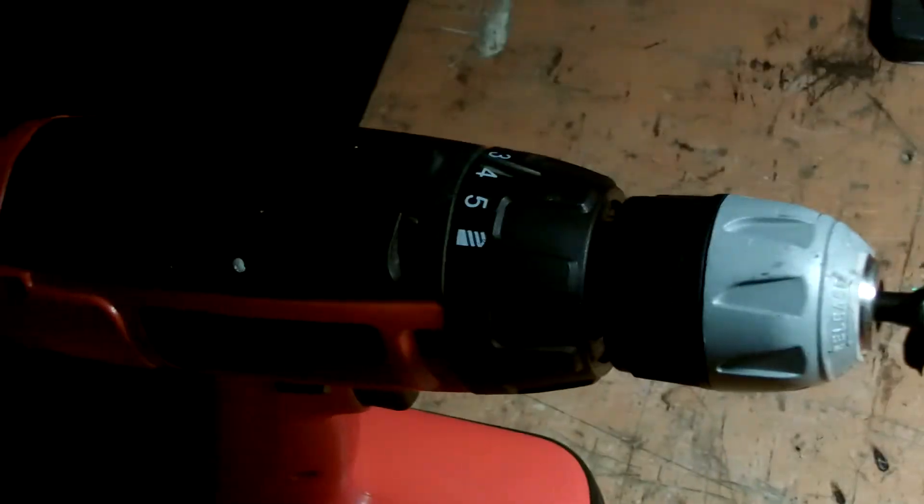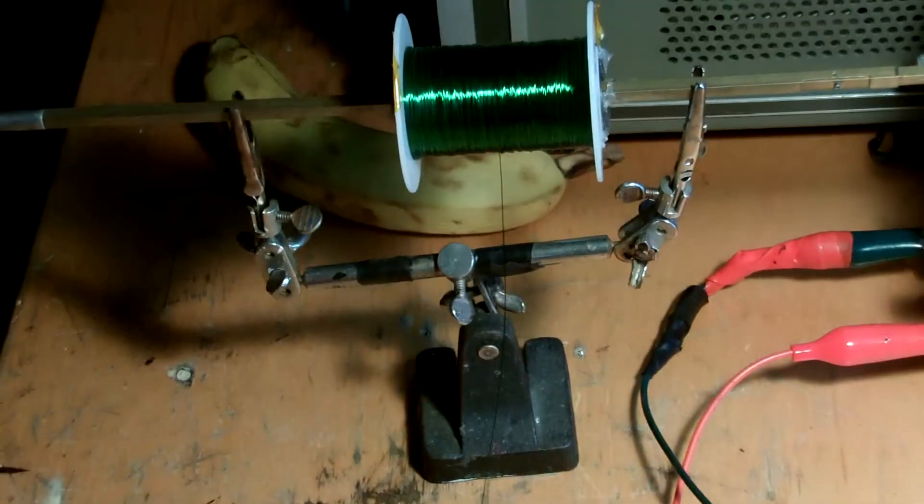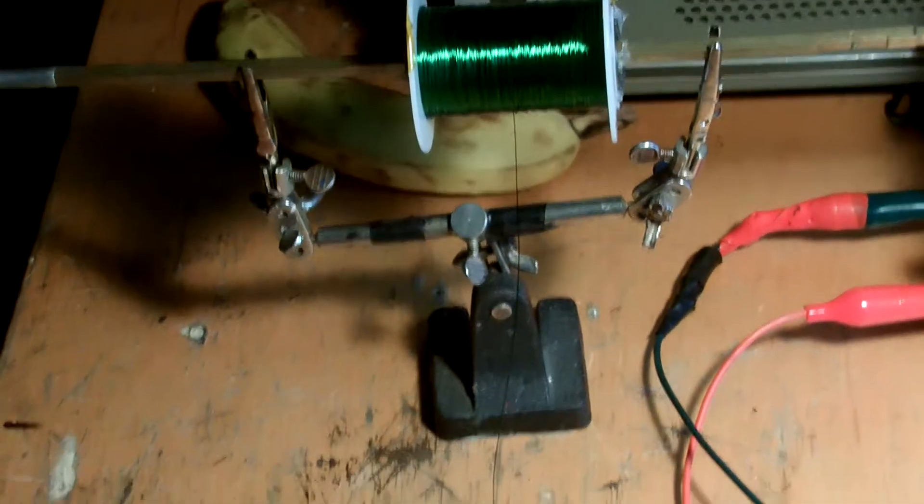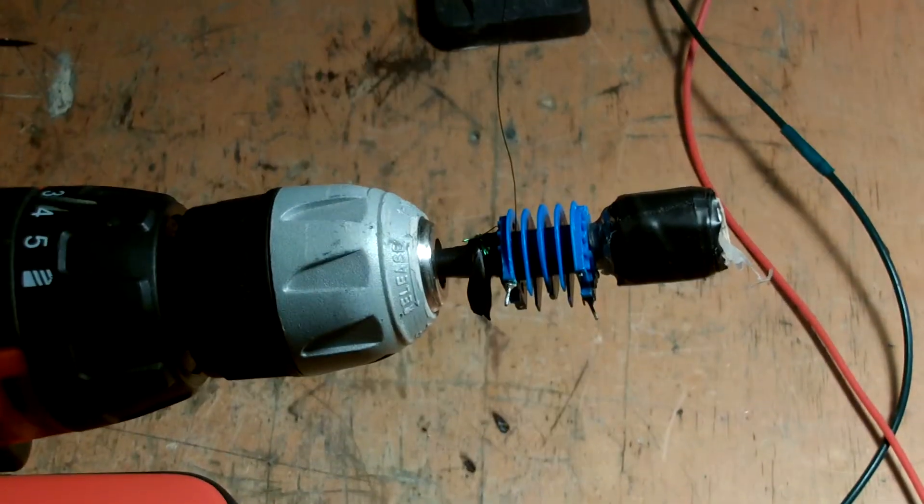Be winding it on this power drill here. That's a spool of 32 gauge wire. The same roll of wire I've used in some of my smaller coils.